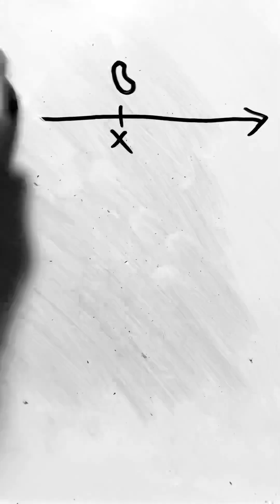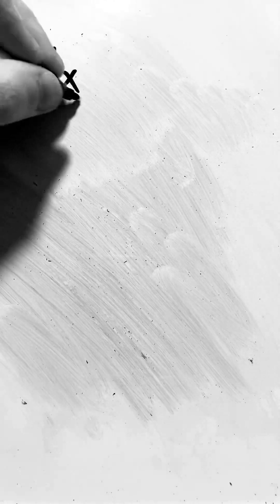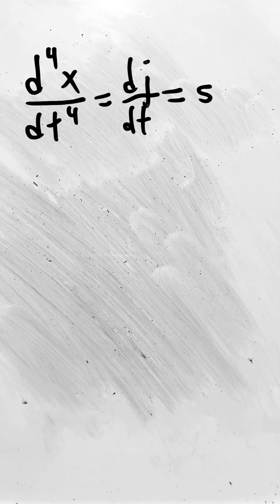Now, what if we kept taking the derivative? What would happen? Well, we can do that. We can just say that the fourth derivative of the position is the derivative of the jerk, which is something called s.